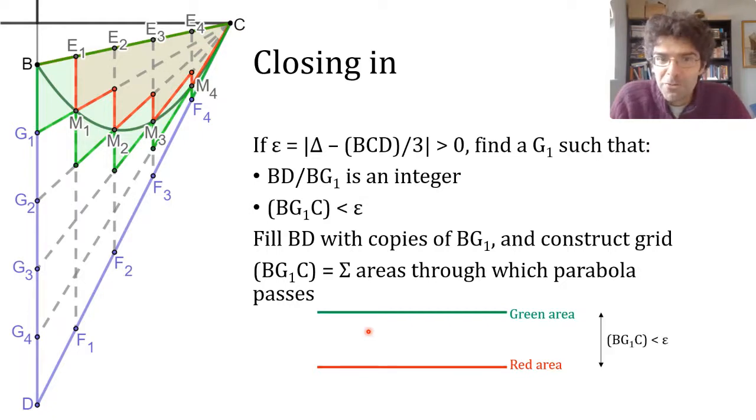Both the area of the parabolic segment and BCD over three lie between those areas. And yet we're claiming that the segment is more than BG1C away from BCD over three. And that's clearly a contradiction. So since there's a contradiction, whenever the area of the parabolic segment is not BCD over three, we can infer that that is its exact value.